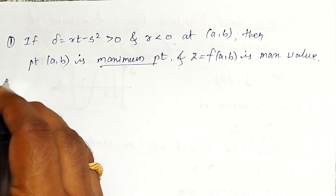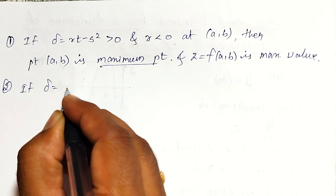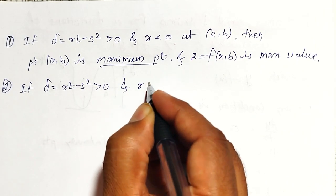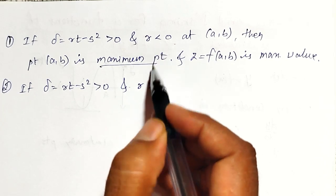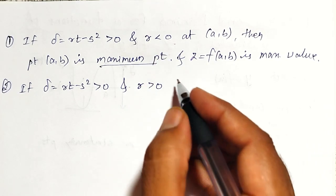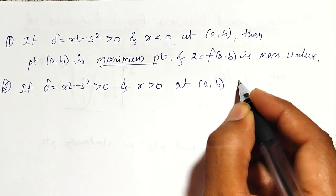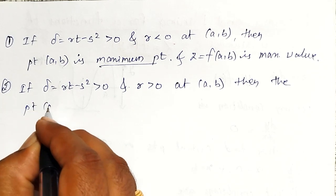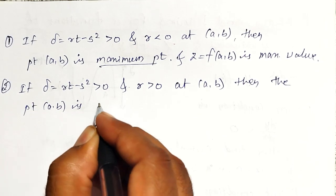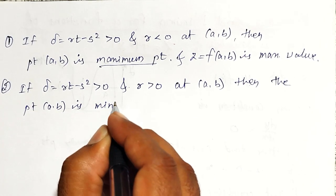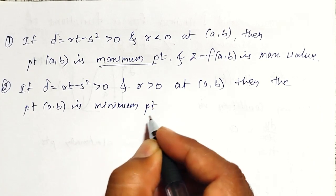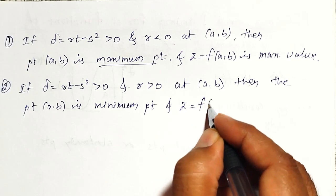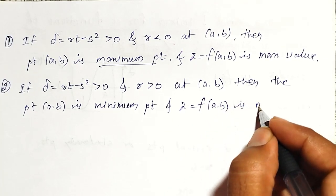Second condition: if delta equal to r t minus s square is greater than zero and r is greater than zero at a, b, then point a, b is a minimum point. And z equal to f of a, b is the minimum value.